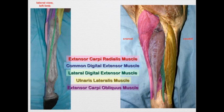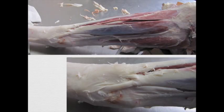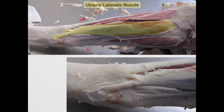And then the extensor carpi obliquus muscle. All of these muscles have the action of extending the carpus, and those with digital in the name are going to also extend the digits. Looking at this image of the antebrachium — this surface is caudal and this is cranial, so we're looking at the right limb — here is the ulnaris lateralis. I want to show you a nice dissection of the short tendon, which attaches to the accessory carpal bone, and the long tendon, which extends on down and attaches to the fourth metacarpal bone.